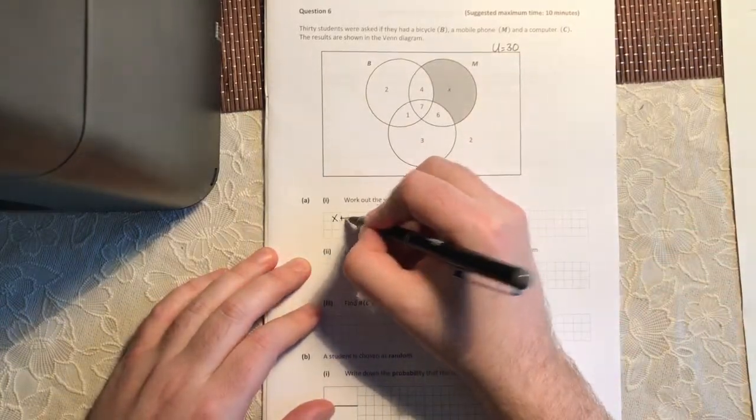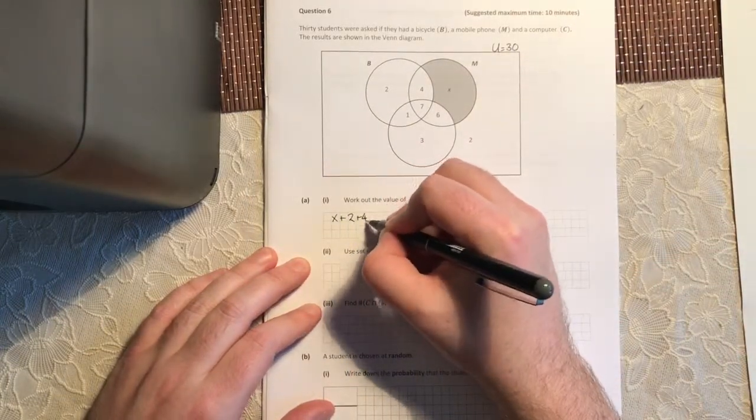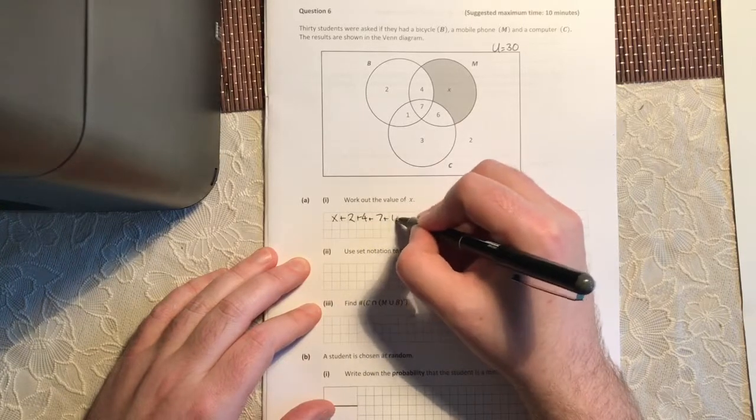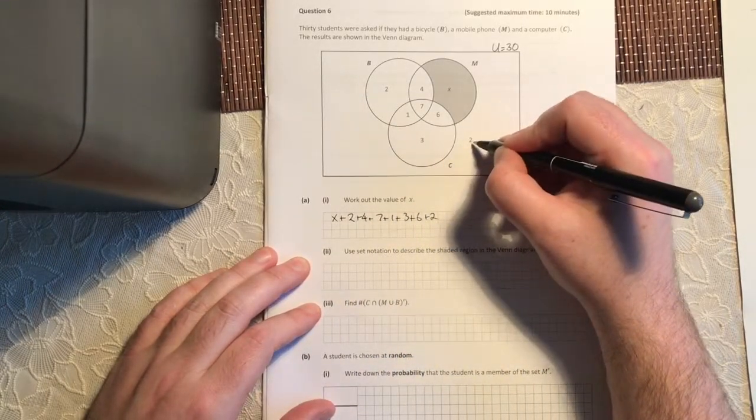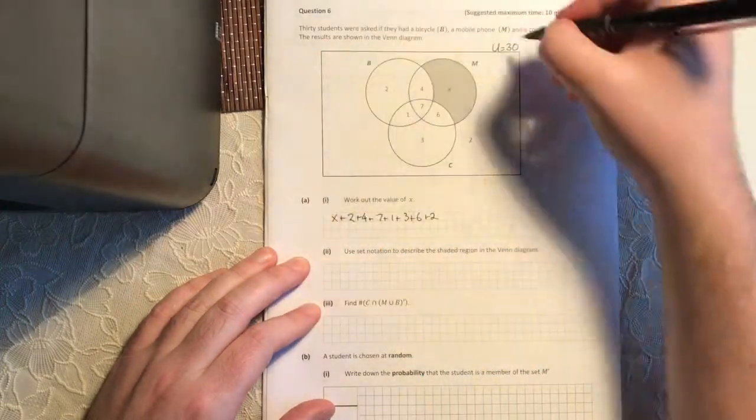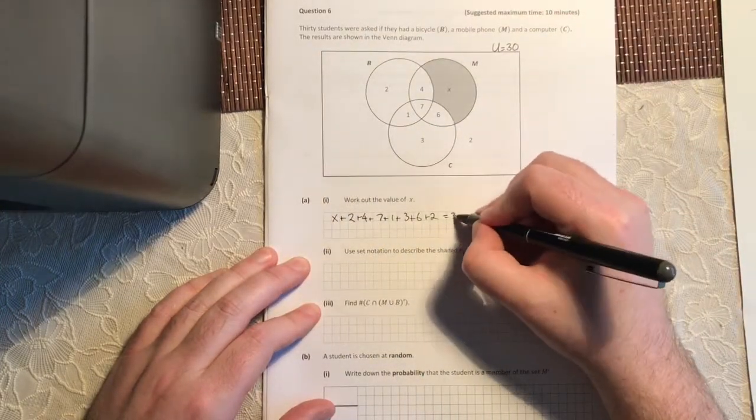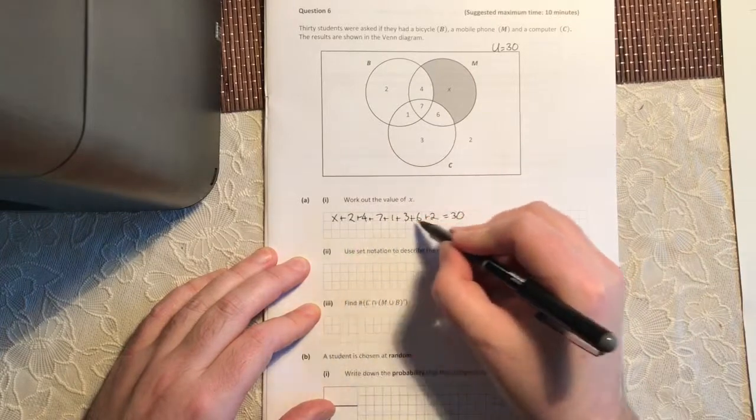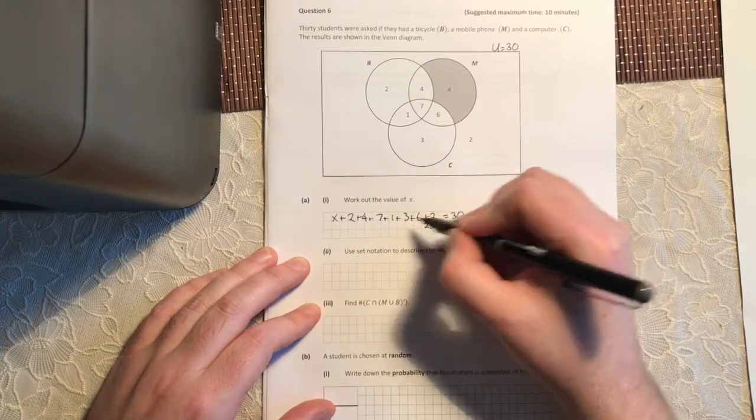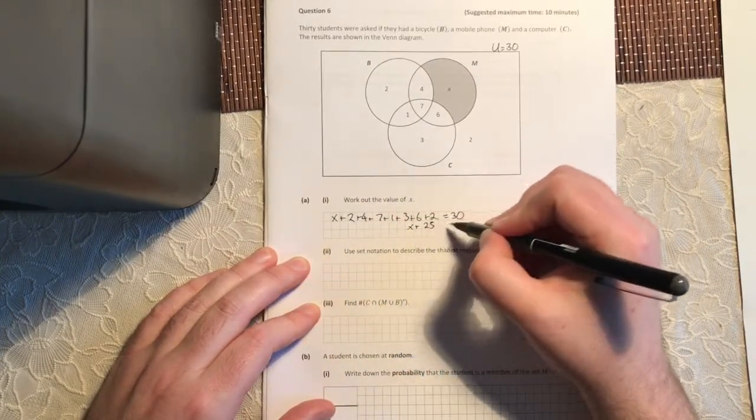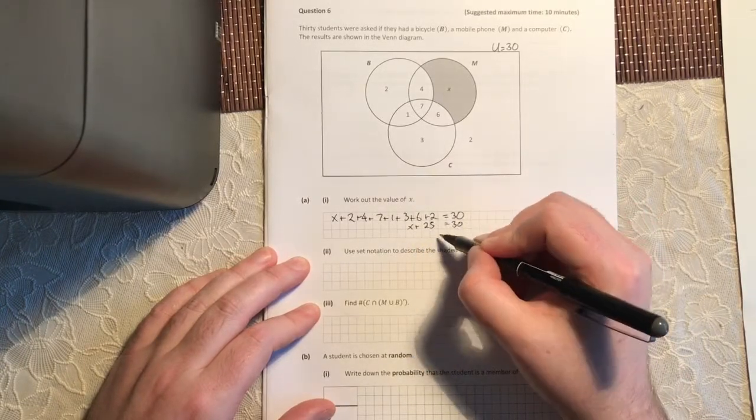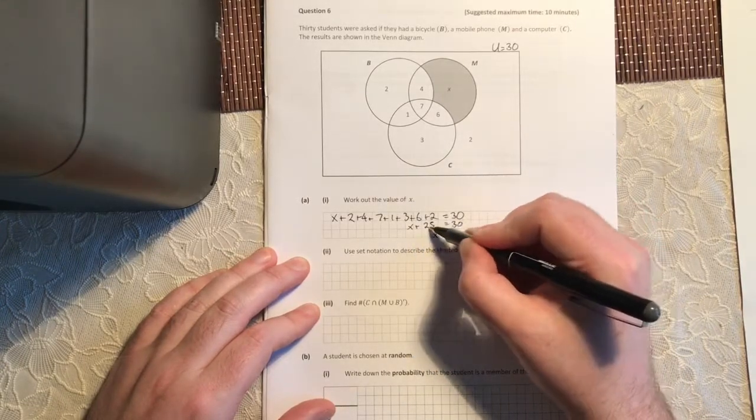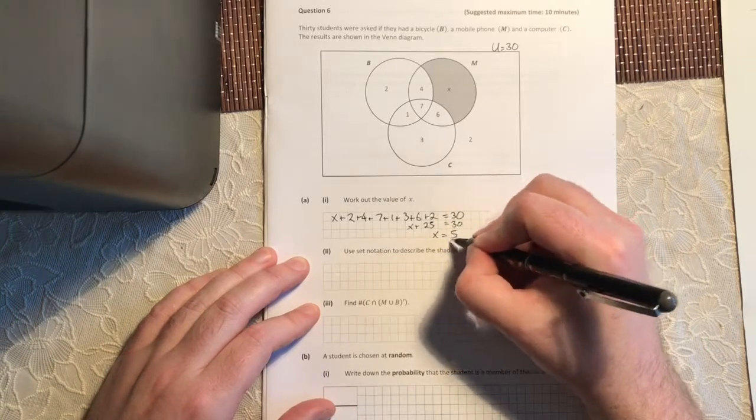So if I take X and add 2 plus 4 plus 7 plus 1 plus 3 plus 6 plus 2—don't forget to add the guys on the outside because they're part of the universe as well. When you add all these numbers together, you get 25. So it's X plus 25 equals 30. Or in other words, some number added to 25 gives me 30. X is going to equal 30 minus 25. X equals 5.